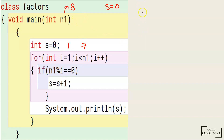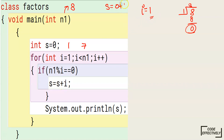First the value of i is 1. We check n modulus i: 8 divided by 1 gives remainder 0. Condition is true, so s equals s plus i — s is 0 plus 1, so s becomes 1. The loop goes again and i becomes 2. i is less than 7 — condition true. We check 8 modulus 2 which is 0. Condition is again true.